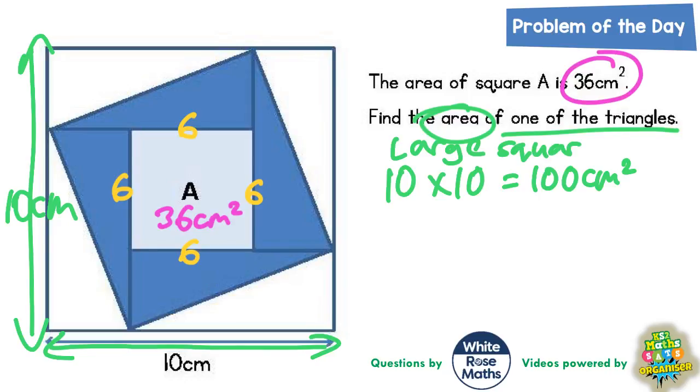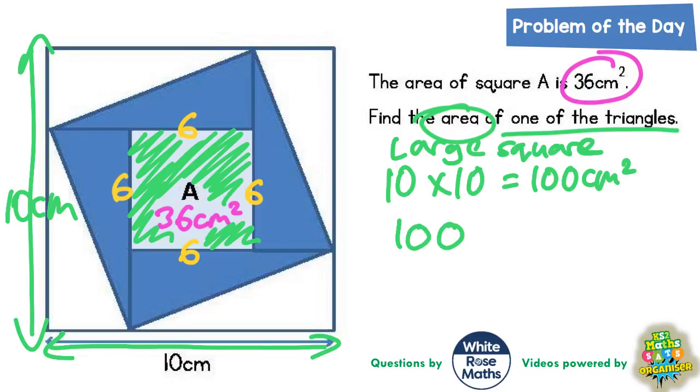But then if you imagine subtracting out the small square from that, so if you take away the area of the small square that would be 100 take away 36. Because if you take the small square which is square A out of the large square, that's when you're left with the 8 triangles. So 100 take away 36.